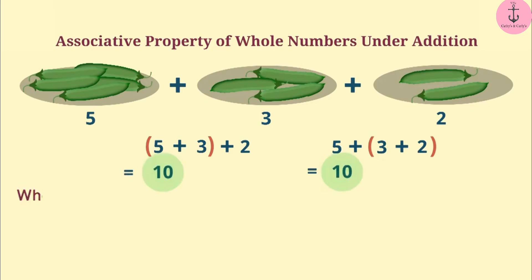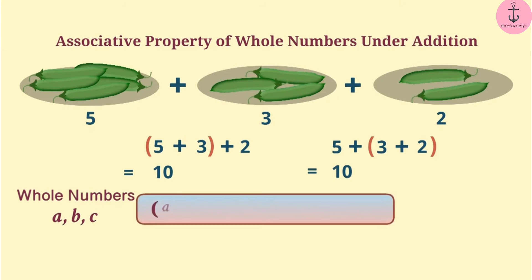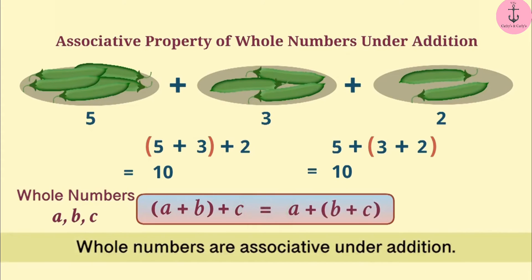In this way, any three whole numbers A, B and C can be added by forming a group of any type. The result of (A + B) + C is equal to A + (B + C). This will always be the same. Therefore, whole numbers are associative under addition.